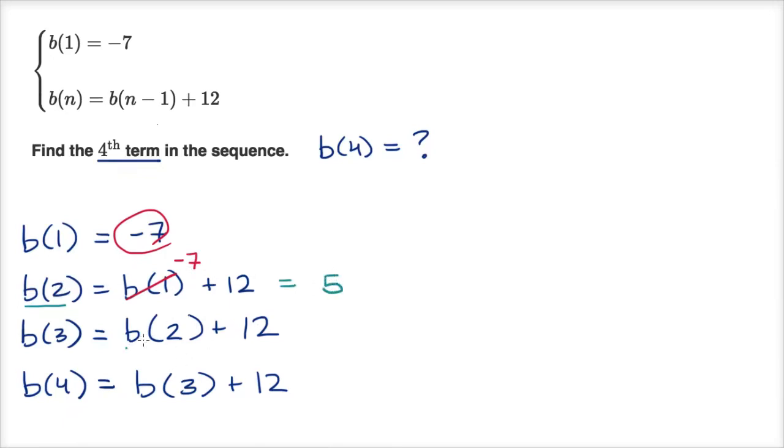If b(2) equals five, then b(3) equals five plus 12, which equals 17.